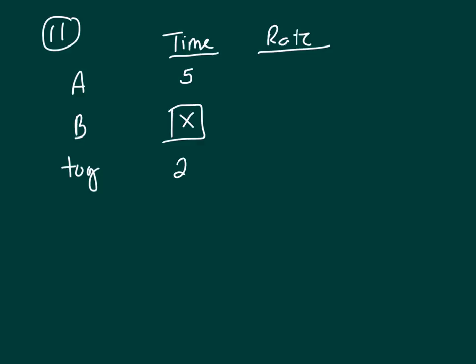To work on a rate when a machine is working with another machine, you take the reciprocal of the time, that would be one-fifth, reciprocal of X would be one over X, and then one over two for together. Now, think about it, two machines working together, that sounds like addition to me.